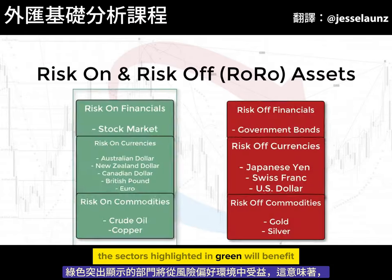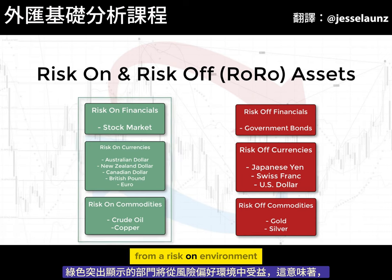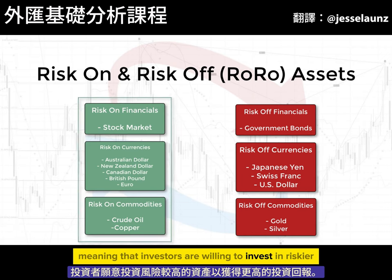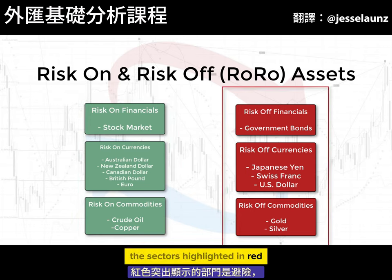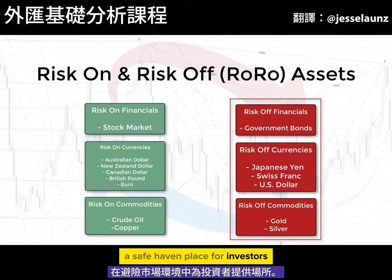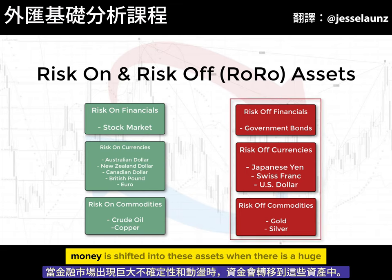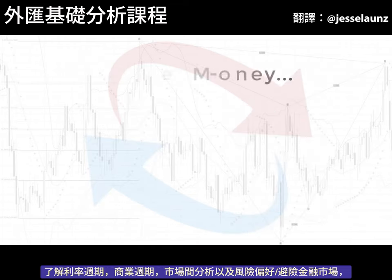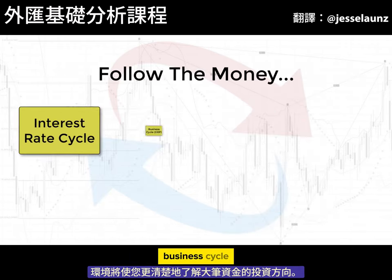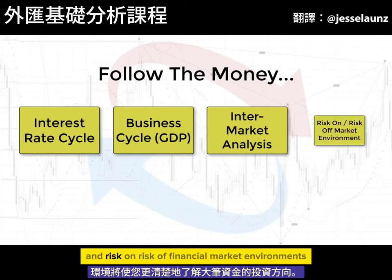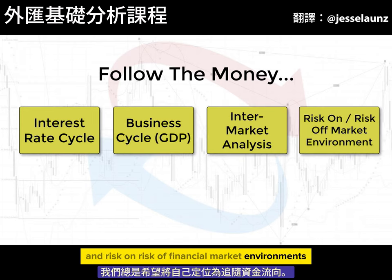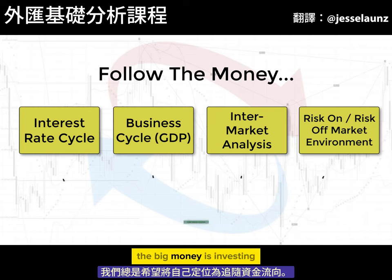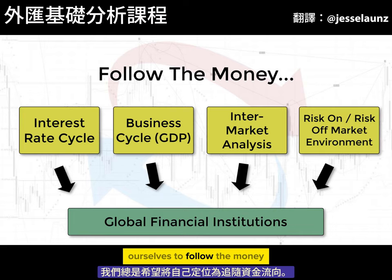Assets like gold, government bonds, and currencies like the Japanese yen are considered safe haven assets because they are expected to retain or even increase in value in a risk-off environment. The sectors highlighted in green will benefit from a risk-on environment, while the sectors highlighted in red are safe haven places for investors in a risk-off environment — money is shifted into these assets during huge uncertainty and turmoil. Understanding the interest rate cycle, business cycle, intermarket analysis, and risk-on/risk-off environments will give you a clearer view of where the big money is investing, and we always want to position ourselves to follow the money.